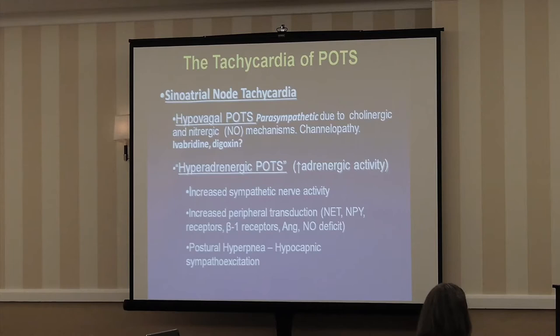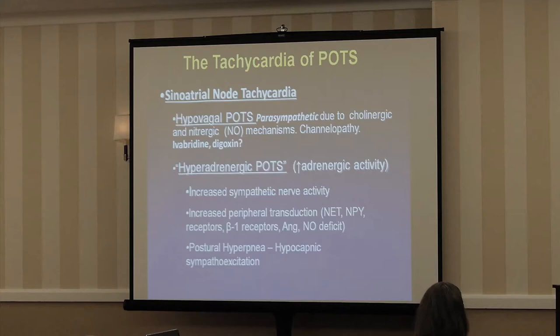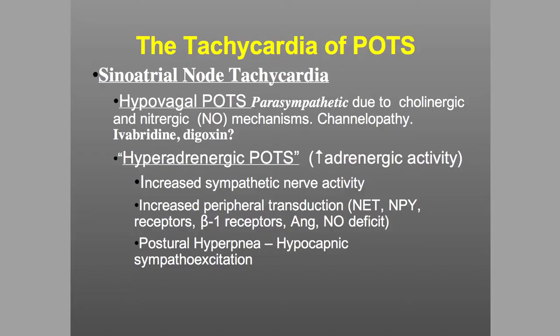My personal POTS classification has changed over the years. There are some who have what looks to be channel defects at the sinoatrial node — some called inappropriate sinus tachycardia. It's very hard to distinguish these from POTS. There's a drug in Europe called ivabradine which works primarily on the sinus node and will slow heart rate. We've used digoxin in some small children to slow their heart rates, but it's shunned in the adult world.